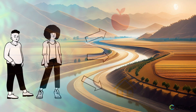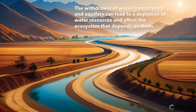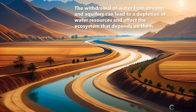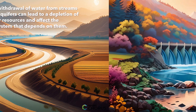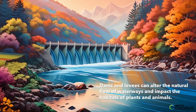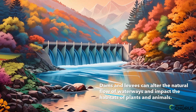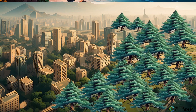One example of human impact on the environment is the withdrawal of water from streams and aquifers. This can lead to a depletion of water resources and affect the ecosystems that depend on them. Another example is the construction of dams and levees, which can alter the natural flow of waterways and impact the habitats of plants and animals.